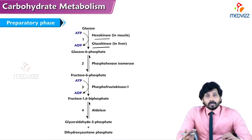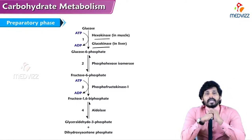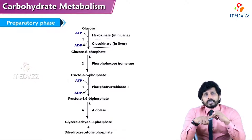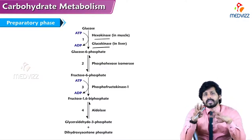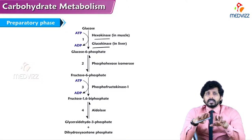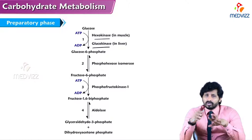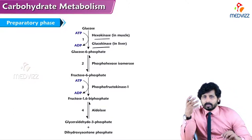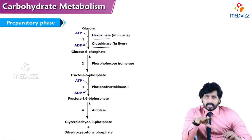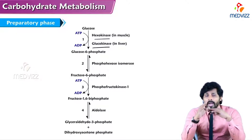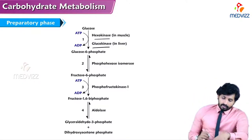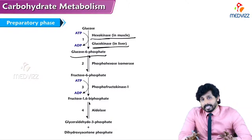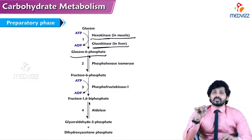The first step of glycolysis is phosphorylation. Once glucose enters the cell via a transporter, it can also leave. To lock glucose inside the cell, the first step adds a phosphate group — phosphorylation at the sixth carbon converts glucose into glucose-6-phosphate. This is the committed step of glycolysis. Two enzymes can act here: hexokinase and glucokinase.